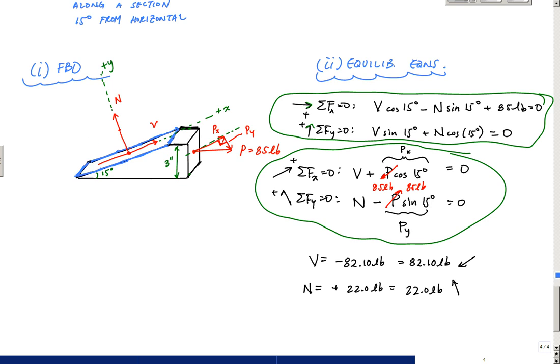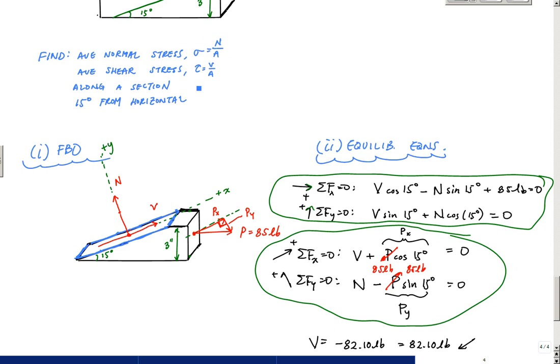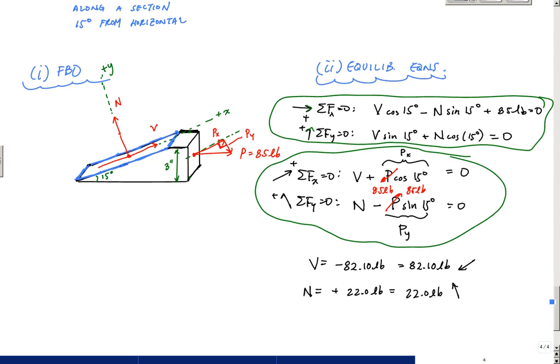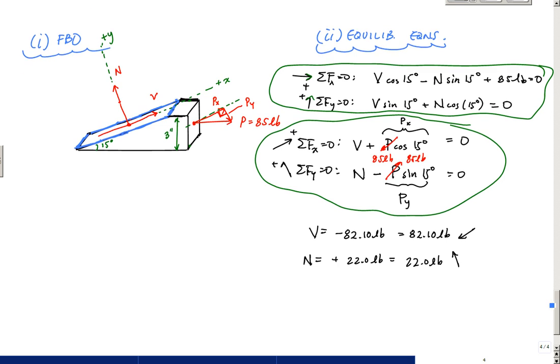Now, the next thing that we need to do is apply these constitutive equations for shear stress and normal stress. But what we need is the area that we're acting on. And so probably the trick in this problem is to accurately determine the geometric properties, in particular this blue zone, which I'm going to call A star.